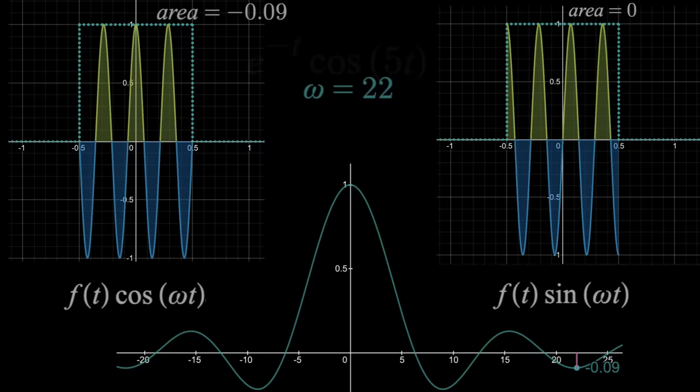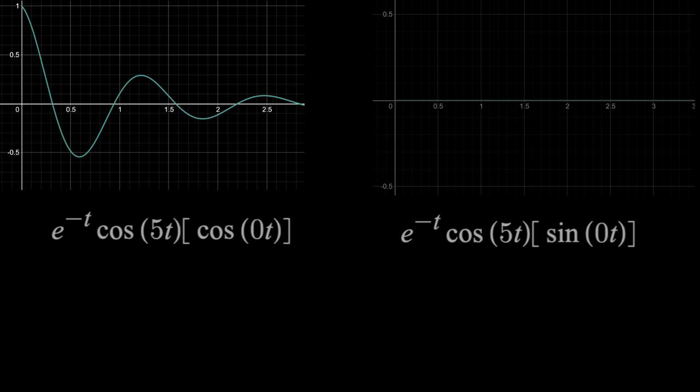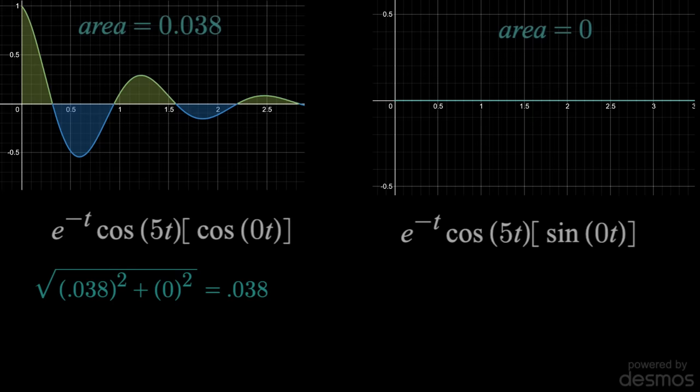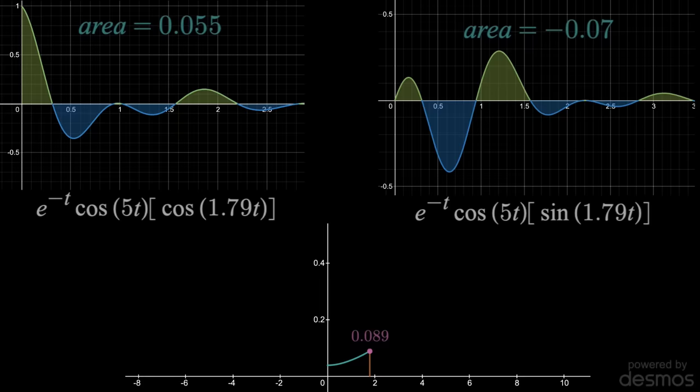In order to find the Fourier transform, multiply that by cosine and sine of omega t starting at omega equals zero, which leaves us with just the function itself and y equals zero. Then find the area under both those curves and use the Pythagorean theorem to get the magnitude and plot that point at omega equals zero. Then just sweep omega and keep track of that magnitude to create the Fourier transform magnitude plot.